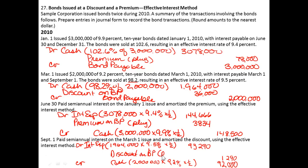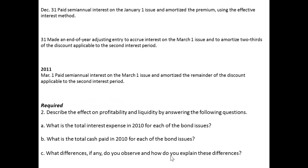The discount is getting plugged, and the carrying value in this case will grow because it needs to grow to $2,000,000, whereas the premium needs to be reduced to $3,000,000. Continuing on, on December 31st, we're going to make a semi-annual interest payment on that first bond again — this is their second payment.